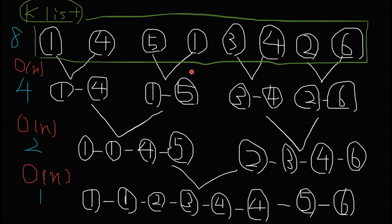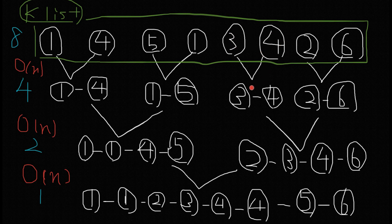You see a lot of numbers on the screen but don't worry — it's not difficult. We have a K list with eight linked lists, each with only one node. Every time we take two linked lists and merge them. So we take one and four, merge them into a one-four linked list; five and one into a one-five list; three and four into three-four; and two and six into two-six. That operation is O(n) because we touch each node once, and we successfully reduce the number of linked lists from eight to four.